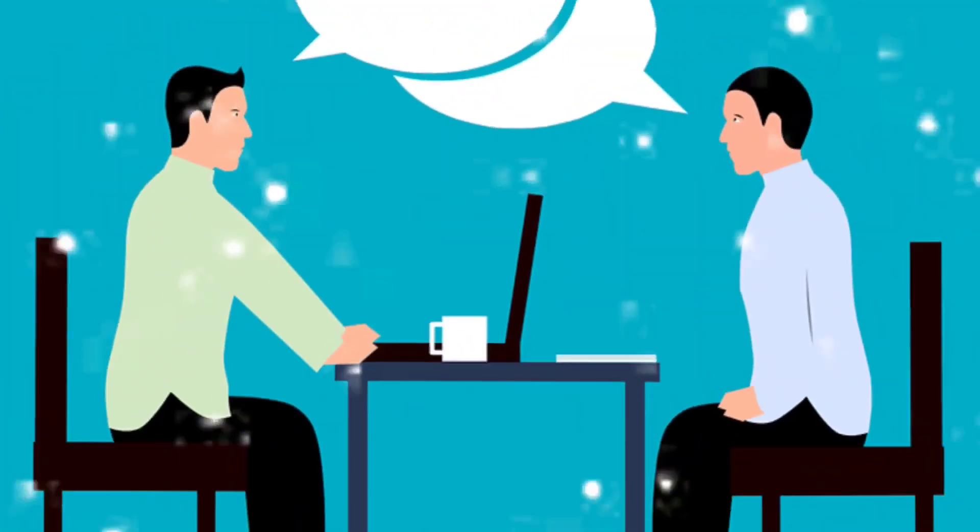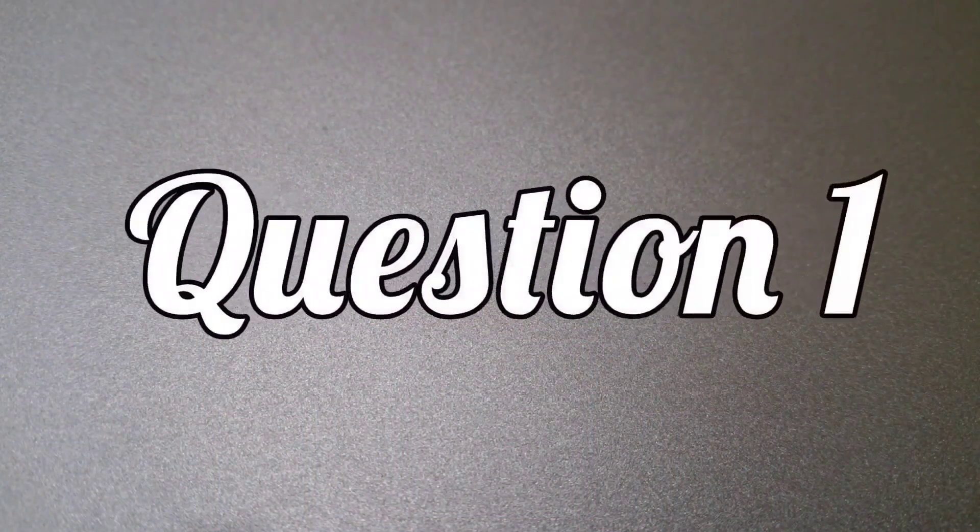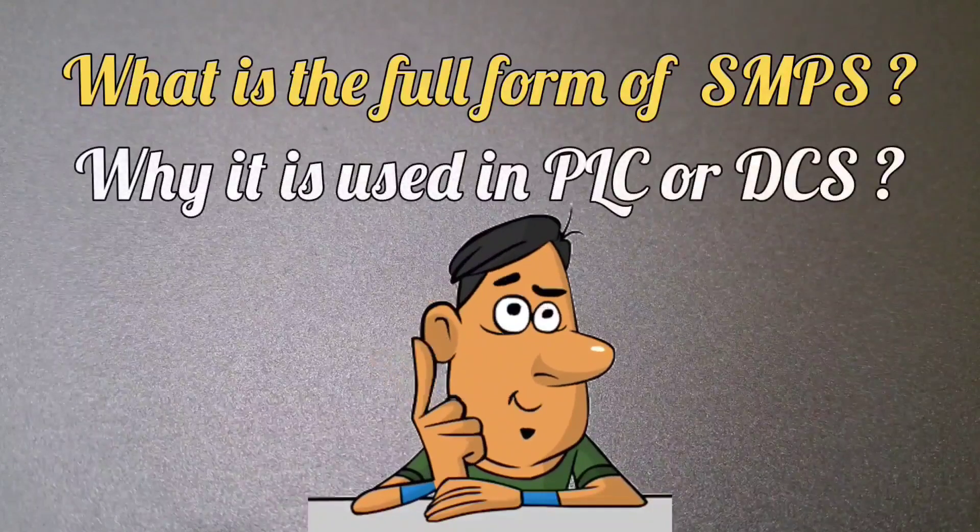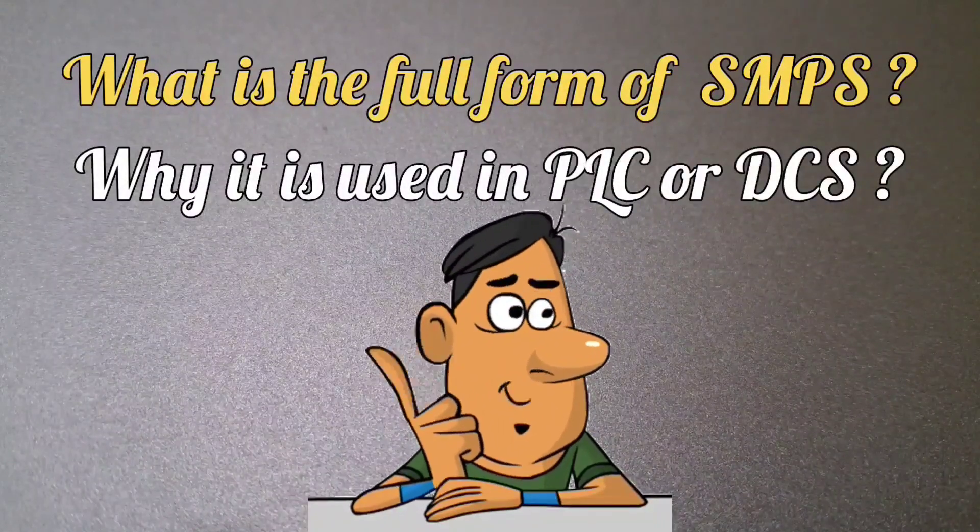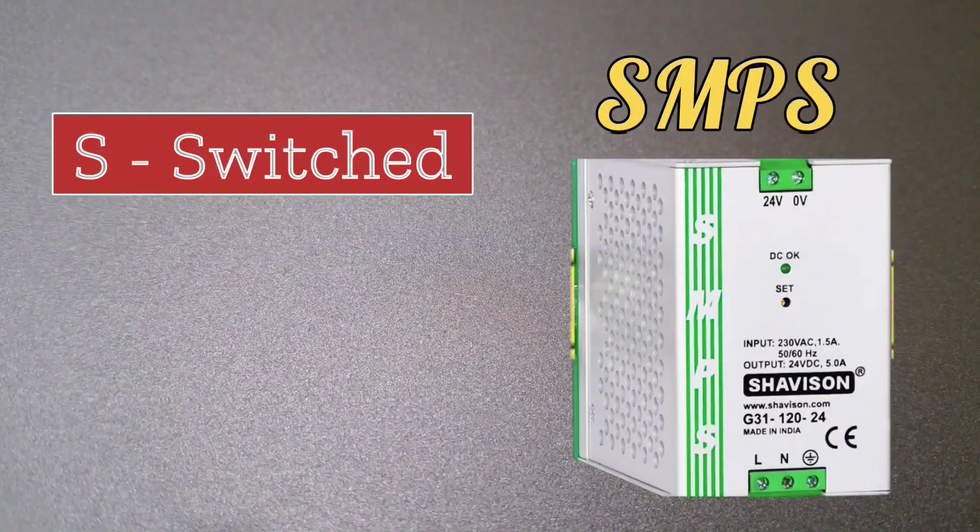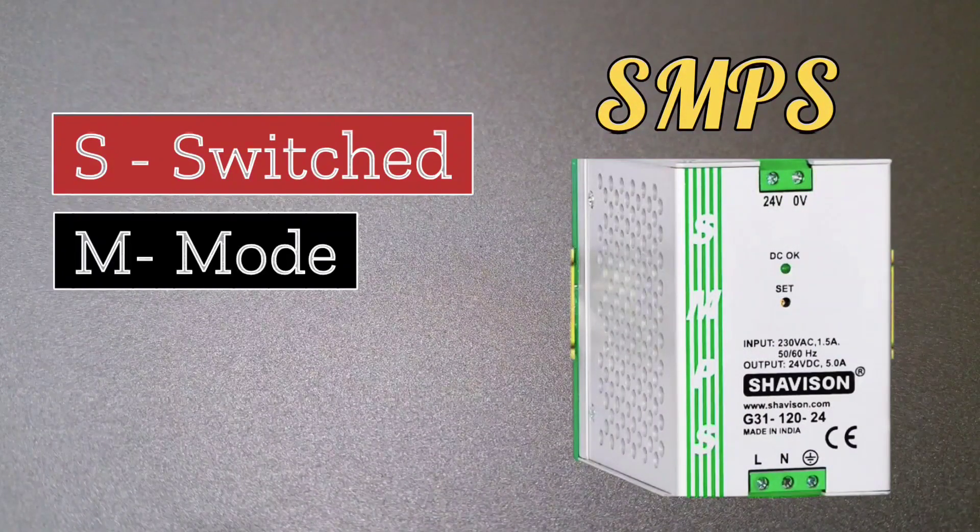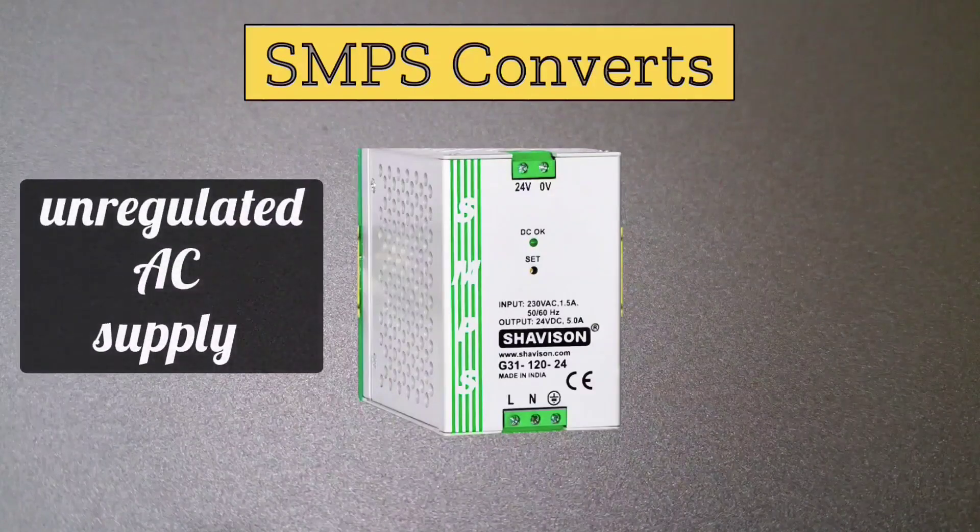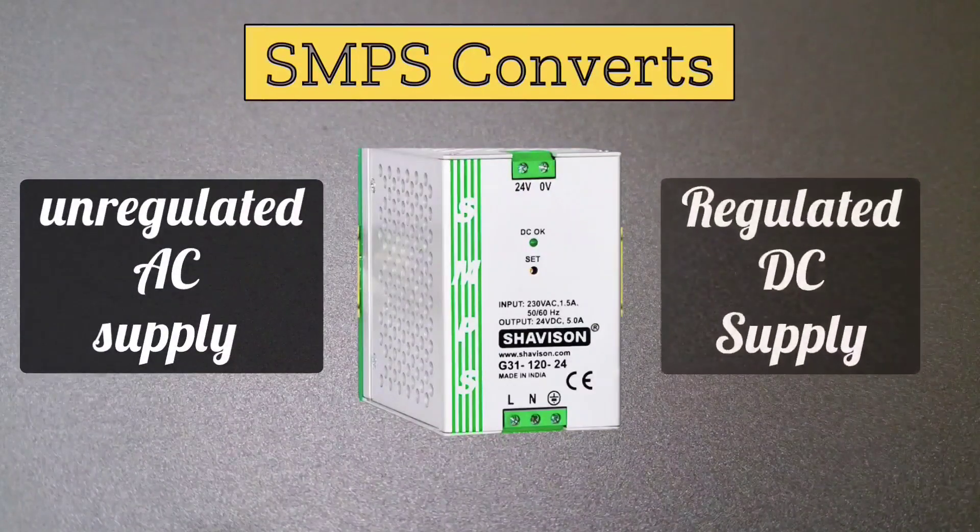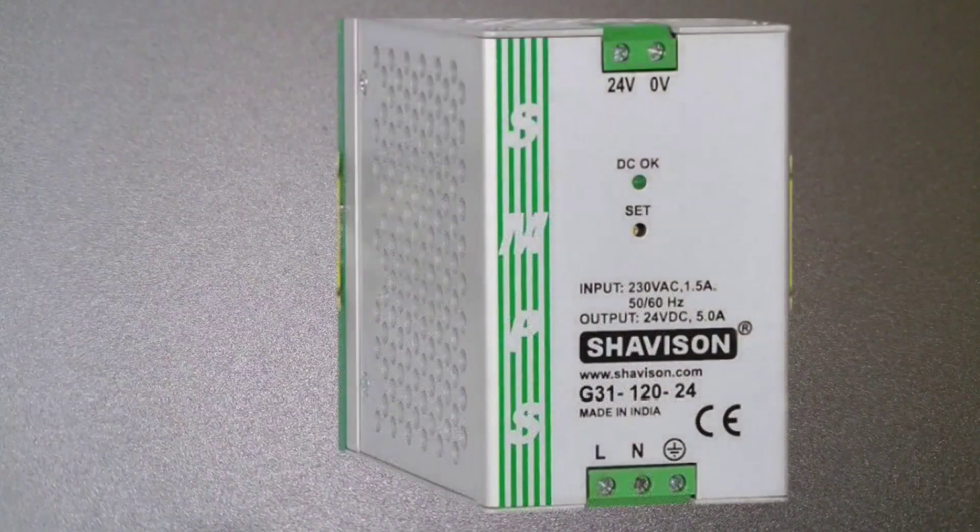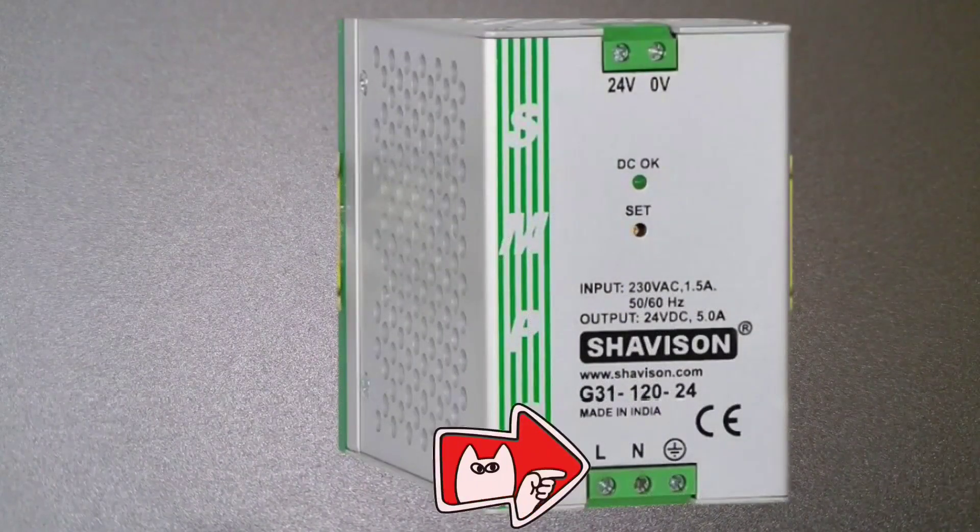Let's take today's first question: What is the full form of SMPS? Why is it used in PLC or DCS? SMPS full form is S means switched, M means mode, P means power, S stands for supply. SMPS is used to convert unregulated AC supply to regulated DC supply.